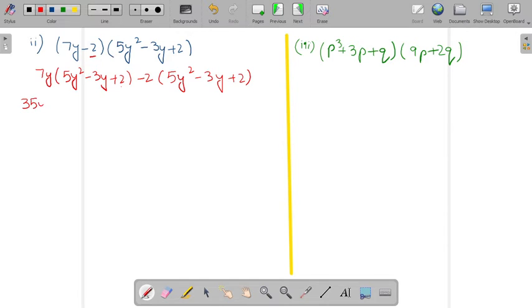you will be getting 35y power 3 minus 21y square plus 14y and here minus 10y square minus minus will become plus. So plus 6y minus 2 multiply 2. So it will become minus 4.